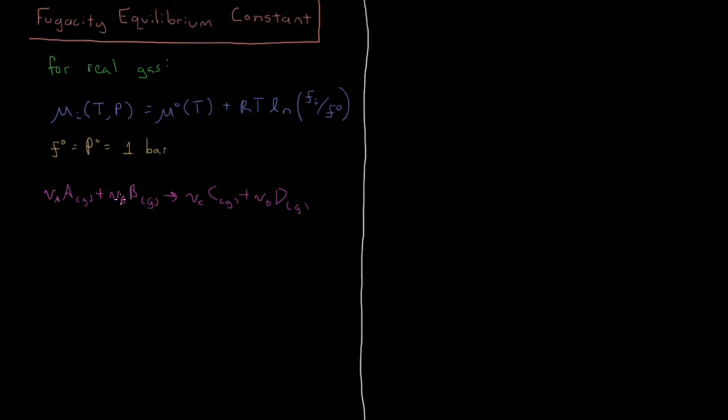So stoichiometric coefficients, chemical species, reactants, and products. So the Gibbs energy of reaction is going to be the stoichiometric coefficients times chemical potential for all of these here. So that's going to be nu C times mu C for product 1, nu D times mu D for product 2, and then subtracting out the reactants, nu A mu A, minus nu B mu B.